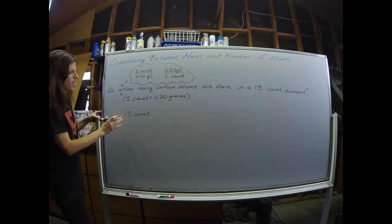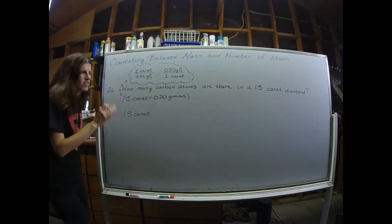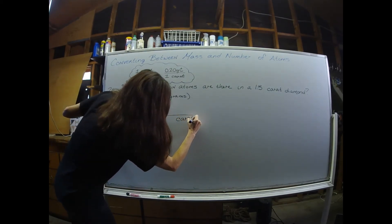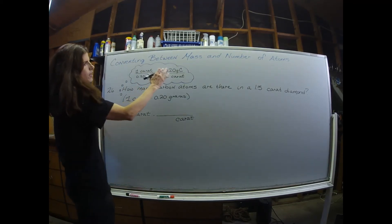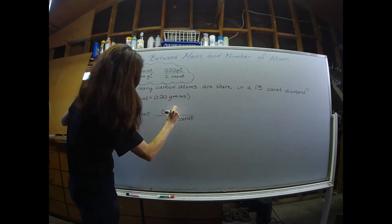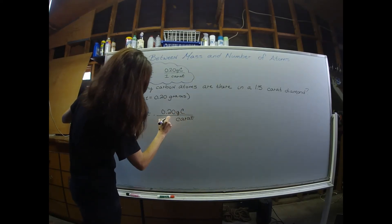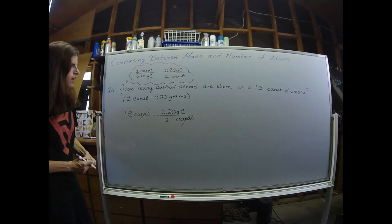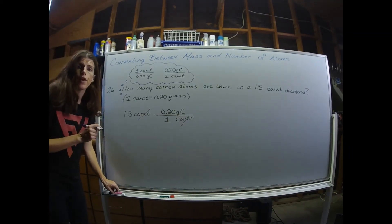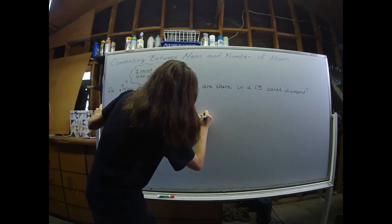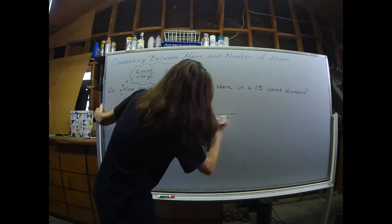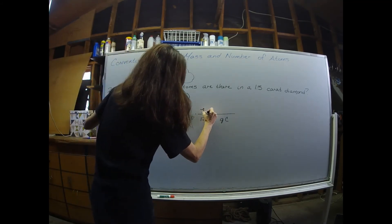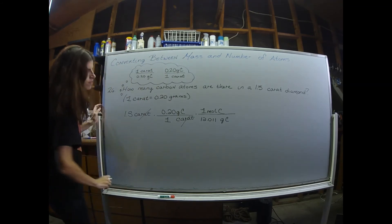Carats don't really have a place in chemistry, so I need to get rid of that by putting carats in the denominator and using the given conversion to get to grams of carbon. Carats are now out of the picture. Next I want to convert grams to moles, so I'll use the molar mass of carbon — 12.011 grams of carbon in one mole of carbon.